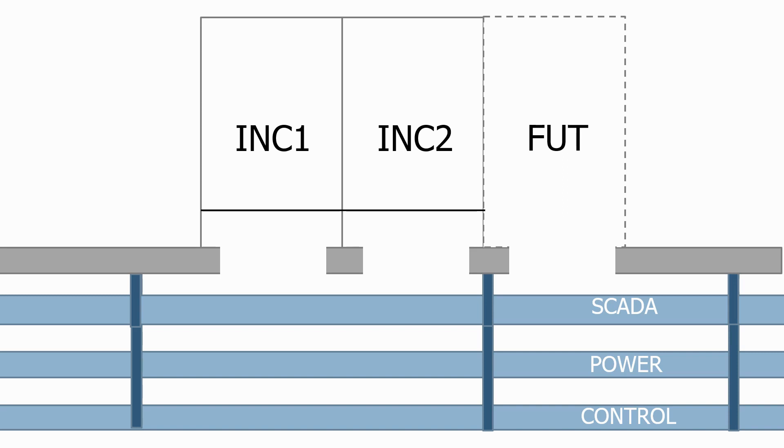The SCADA cables tend to have the lowest bending radius, so it's normal practice to put these on the top layer. We then connect each of the cables onto their associated cable tray.